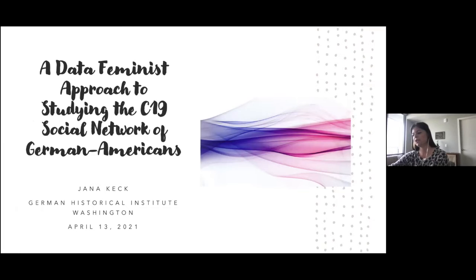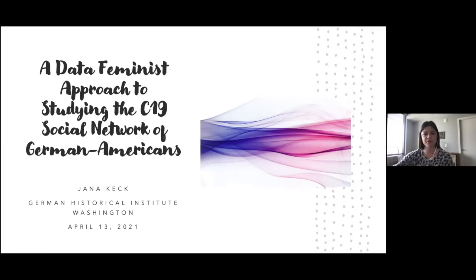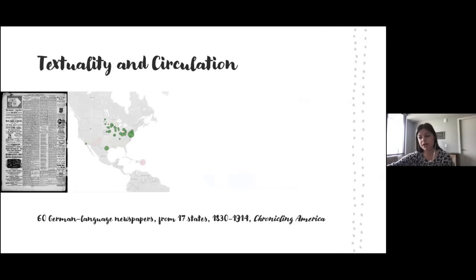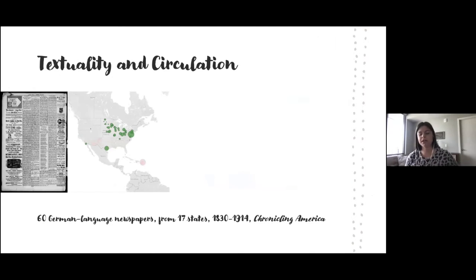Texts circulated promiscuously among newspapers as editors freely reprinted materials from other venues. Can we identify reprinting practices in the German immigrant newspapers, even though publication locations were far apart? So in my PhD project, I use 60 German language newspapers from 17 states in the United States, published between 1830 and 1914 to examine reprinting practices.